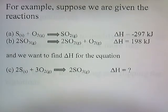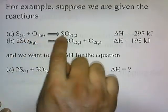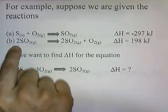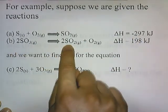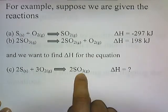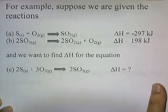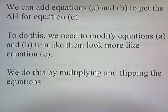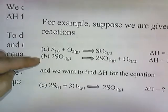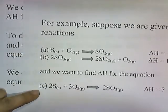For example, suppose we're given the reactions: S plus O2 gives SO2 with a delta H of negative 297, and 2SO3 decomposes to form SO2 and O2. We want to find the delta H for the equation 2S plus 3O2 gives 2SO3. We don't know what the delta H is, but we can add equations A and B to get the delta H for equation C by adding these two equations in some way to get this third equation.